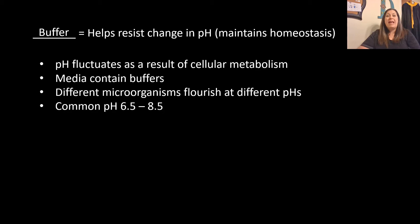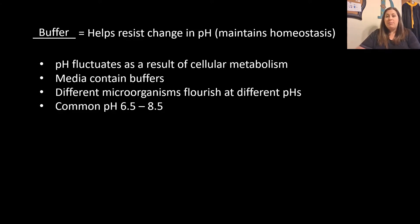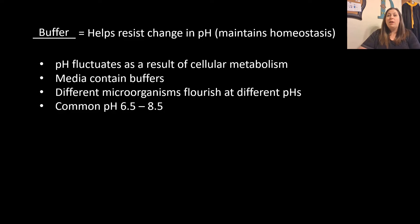Buffers are chemicals that help resist a change in pH, helping maintain homeostasis. pH fluctuates as a result of metabolism — when cells undergo chemical reactions, the pH can become more acidic or more basic, so a buffer is needed. In microbiology, the media inside plates where we grow bacteria contains buffers, allowing us to successfully grow bacteria. Different organisms flourish at different pHs — some microorganisms prefer acidic or basic environments — but the majority prefer anywhere between 6.5 and 8.5, with seven right in the middle.